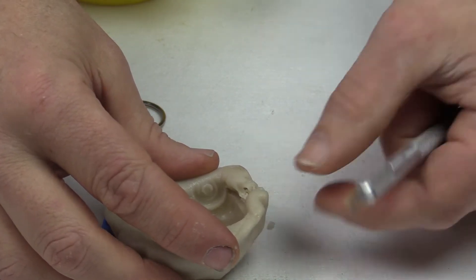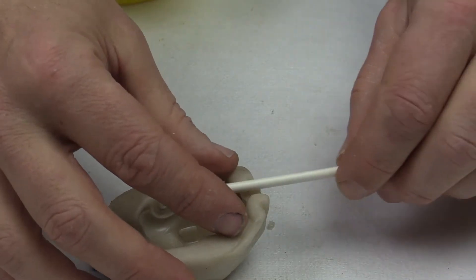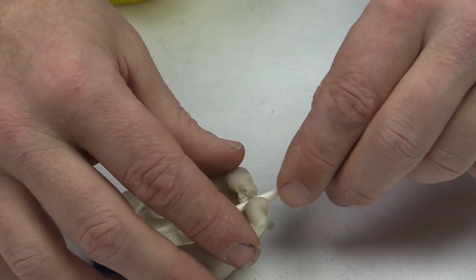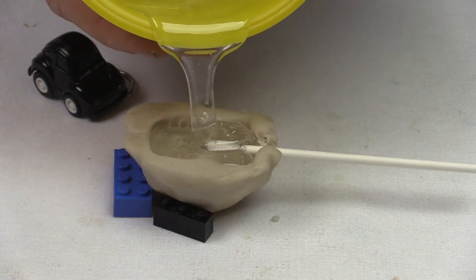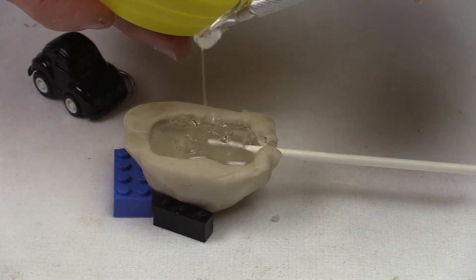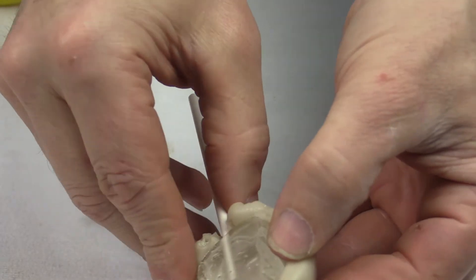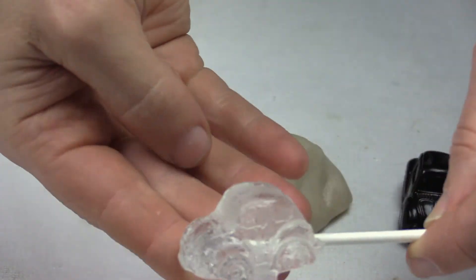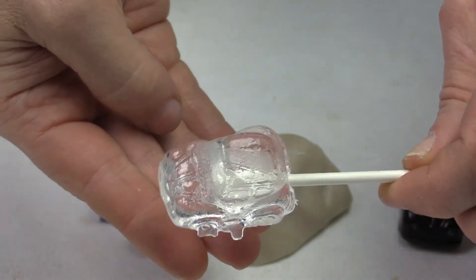Now you're ready to pour in your isomold. Add your lollipop stick. Let this cool again. Ta-da! Admire your new lollipop.